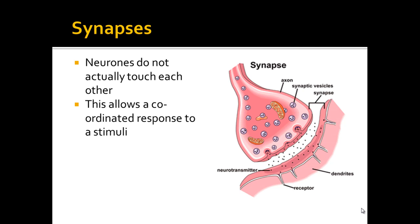Thanks for joining me. This is my third video on the nervous system and we're going to be looking at synapses today. You can see on this diagram that you've got two different cells here — what's sometimes referred to as a pre-synaptic cell and then a post-synaptic cell. This gap that you see in the middle here is actually called a synapse, hence pre- and post-synaptic cell.